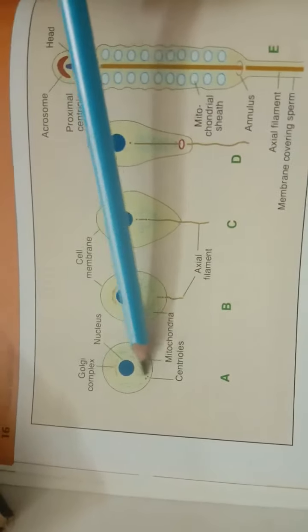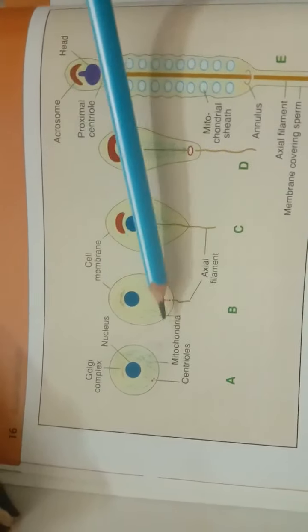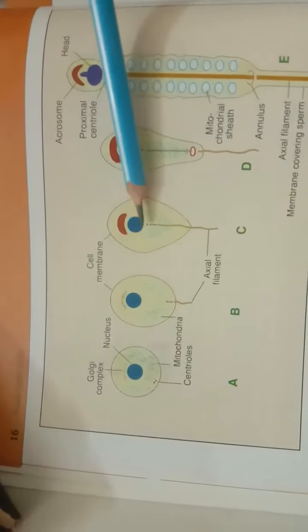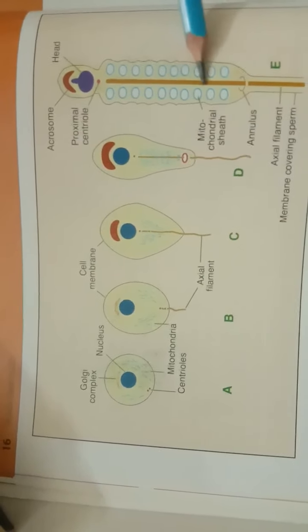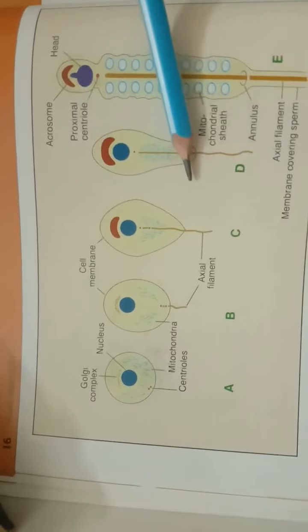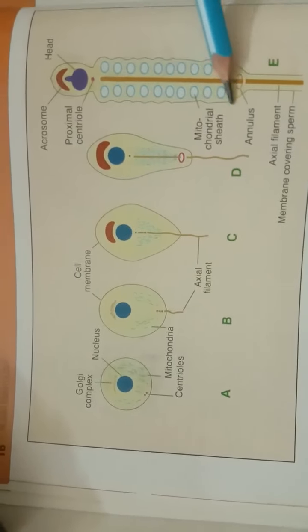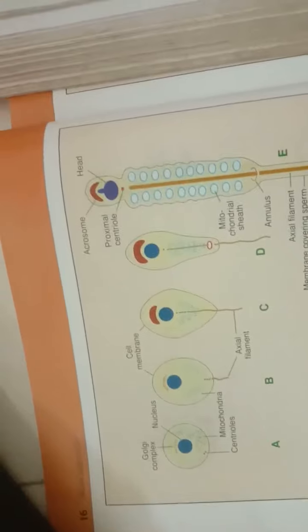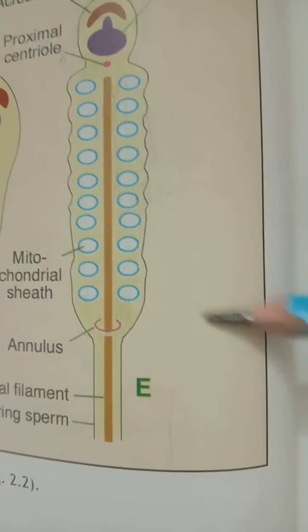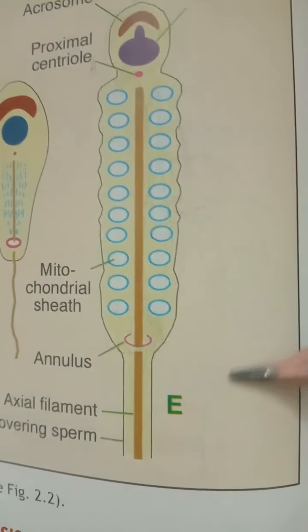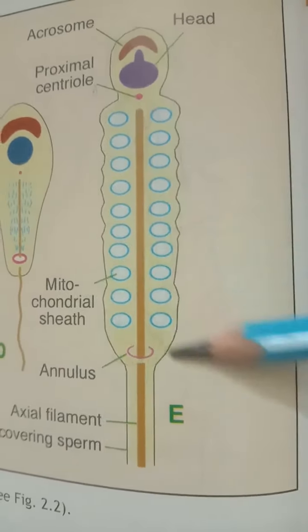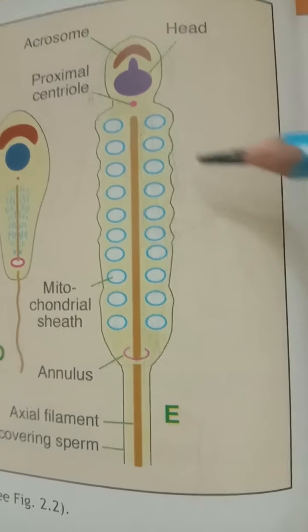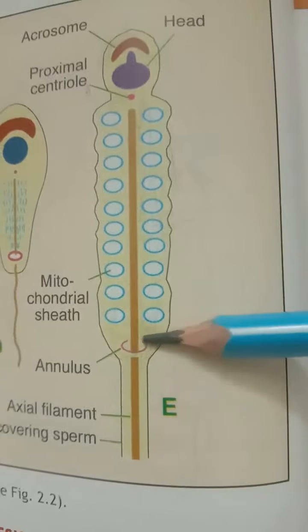Then the centriole divides into two parts. One centriole moves towards the posterior end of the nucleus, forming the axial filament. The other centriole moves away from the first to form the annulus. Then the mitochondria accumulate around the axial filament. Centrally the axial filament is present, and around it the mitochondria are present from the proximal centriole to the annulus.